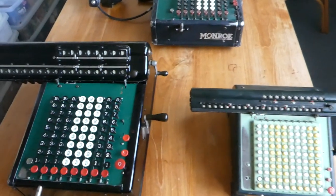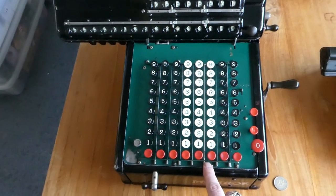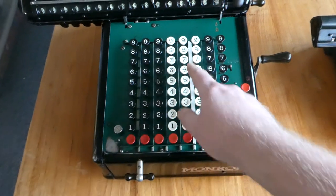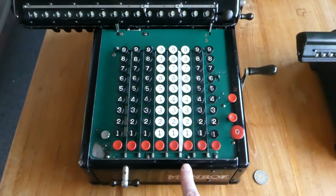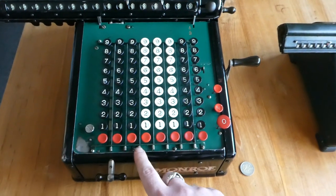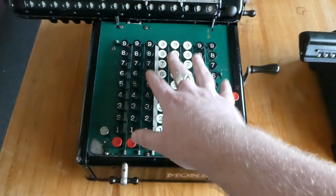Another thing I haven't shown you yet is this. These are indicators for where the comma is, the decimal comma or decimal point. So you can show where the decimal point is during your calculation or keep track of it.